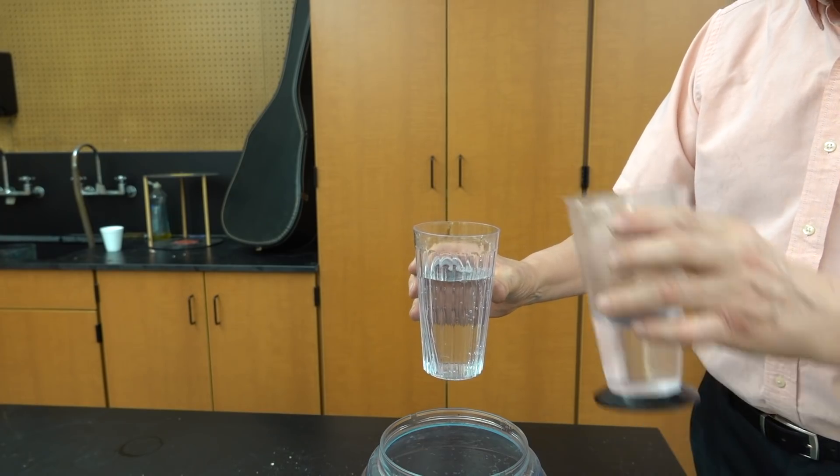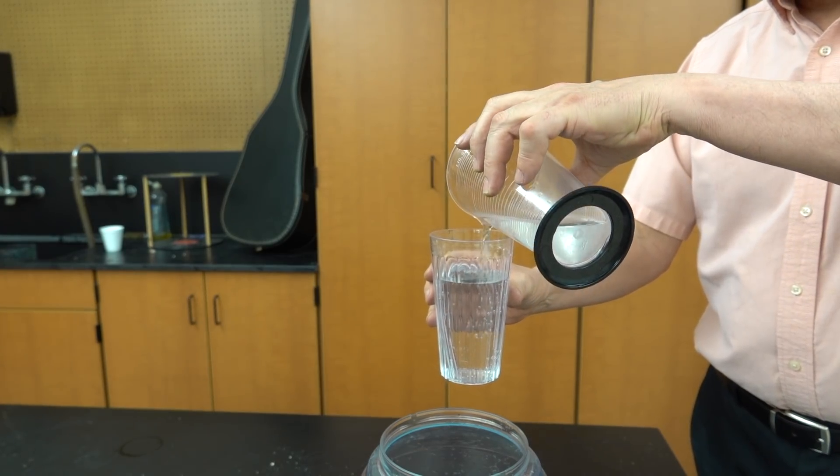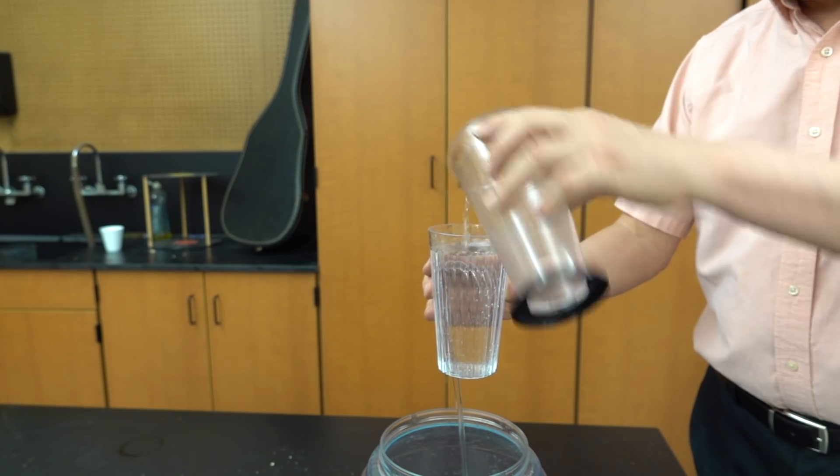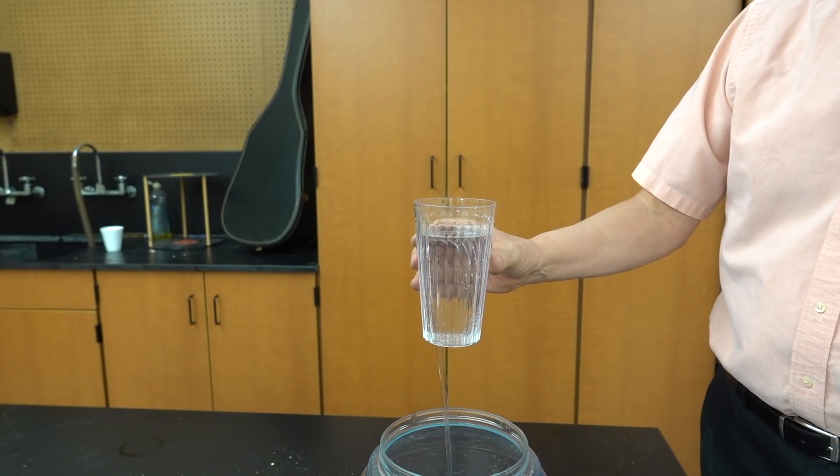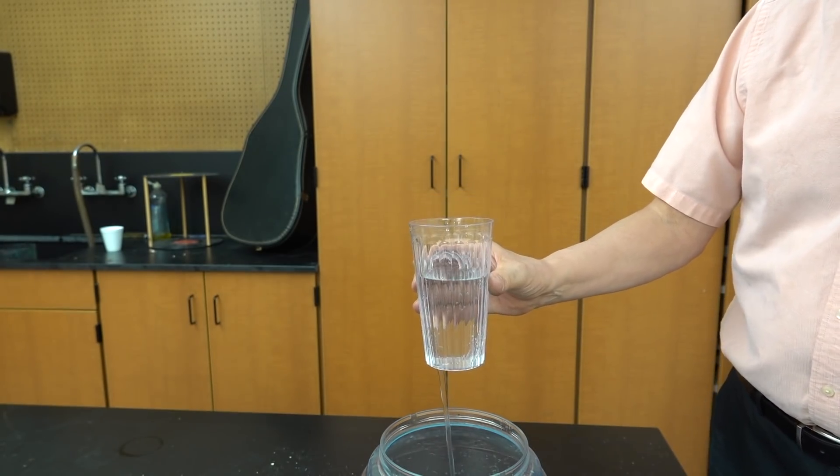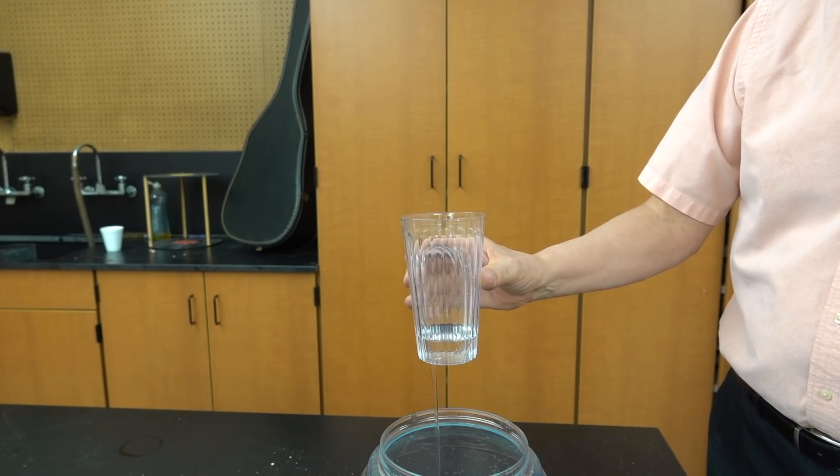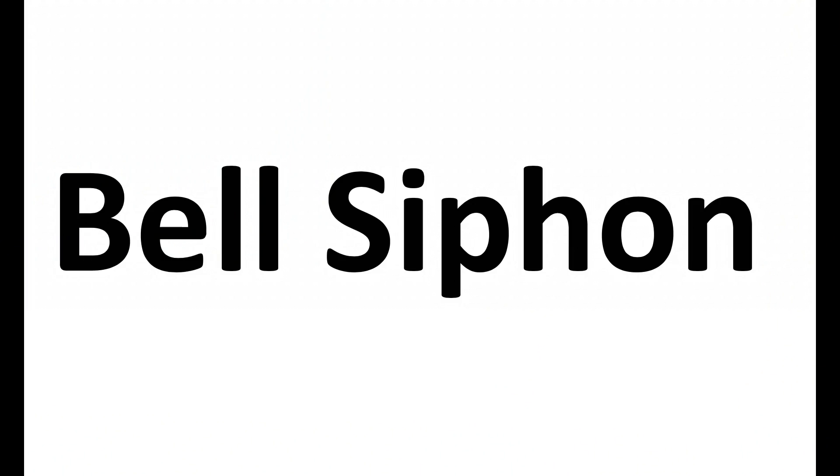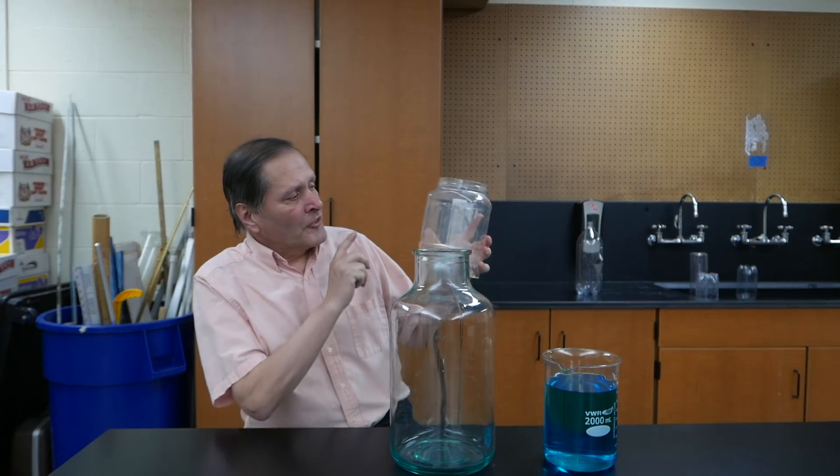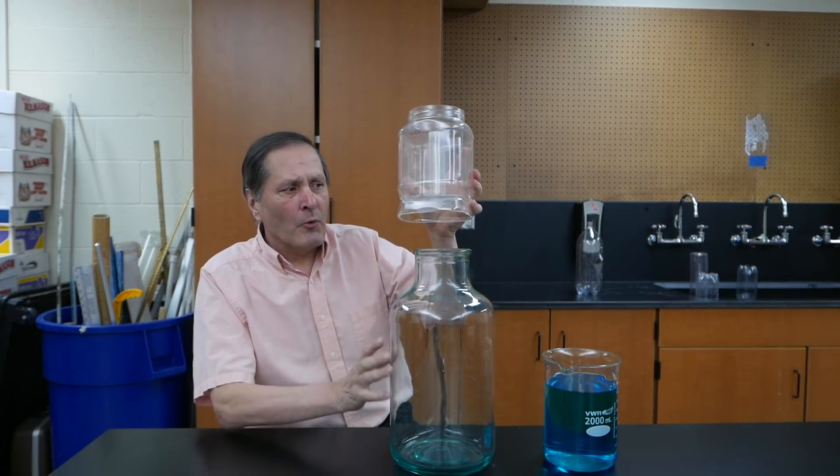Here's another one that I made in a clear plastic drinking glass. Now I think the more interesting version of the Tantalus cup is the bell siphon. So let's see how that works.